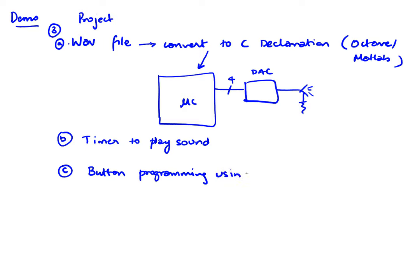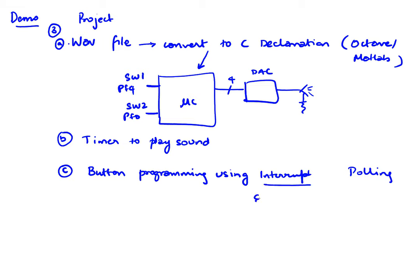We will use our two buttons on our LaunchPad, which are switch one on PF4 and switch two on PF0. We will program them using interrupts rather than polling, which is how we've mostly been programming them. These are also sometimes referred to as edge-triggered interrupts. I will not walk you through all the steps, but this project will be available on the class website and will demonstrate all three of these concepts.